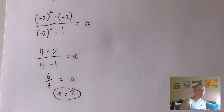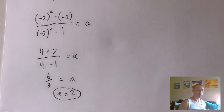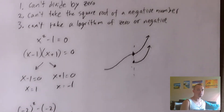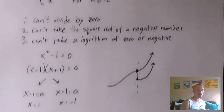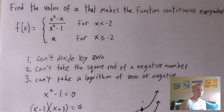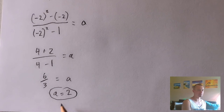A equals two should guarantee that this piecewise function is continuous at X equals negative two. And since we confirmed it's already continuous everywhere else, that means it's going to be continuous everywhere for any X value. So A equals negative two would be our answer. That shortcut can be used in pretty much any piecewise continuous function problem you might run into.